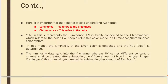People also call this model the luminance and chrominance model. In this model, the luminosity of the given color is detached and the hue — which means the color — is determined by detaching the luminosity from the given color. You will understand it better when I show you a diagram. Just remember: luminance refers to brightness, chrominance refers to color, Y is connected to luminosity, and UV is connected to chrominance.